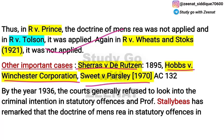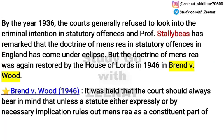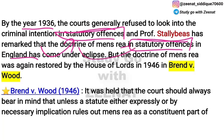Besides these, other important cases include: Sherras v De Rutzen, Hobbs v Winchester Corporation, and Sweet v Parsley 1970. In Sherras v De Rutzen, it was held that doctrine of mens rea is implicit in every statute unless expressly barred. In Sweet v Parsley, it was held that no offense can be committed without mens rea; if any act is done without mens rea, it is not an offense.